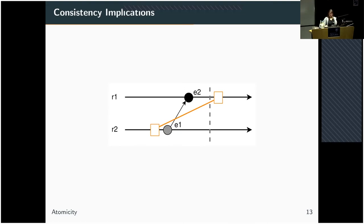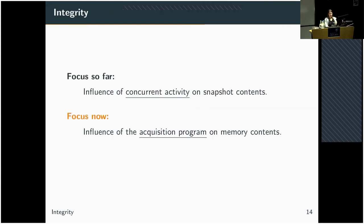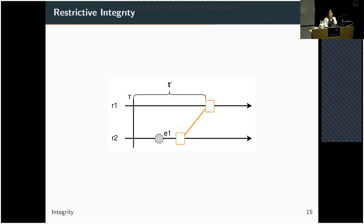Now we've been thinking a lot about consistency. Let's change focus and move on to integrity. Consistency is mostly about the influence of concurrent activity on the snapshot contents. In the case of integrity, on the other hand, we need to think about the influence of the acquisition program on the memory contents. Föhmel and Freiling defined integrity with respect to a point in time tau — this could, for example, be the time at which the acquisition program has started. Simply put, they said that between tau and the acquisition of each memory region, no modifying events are allowed to happen. If event E1 happened, the snapshot wouldn't satisfy integrity anymore.